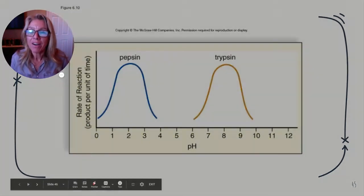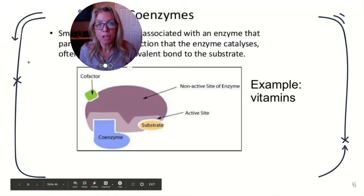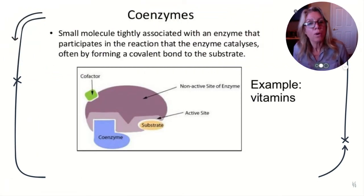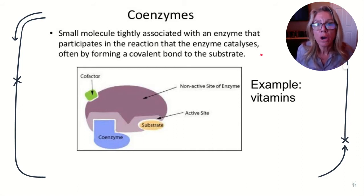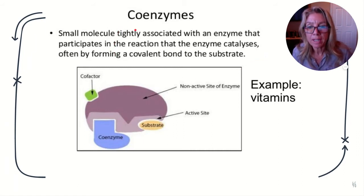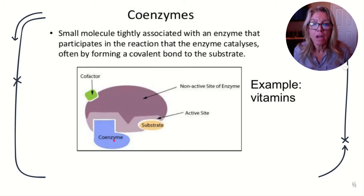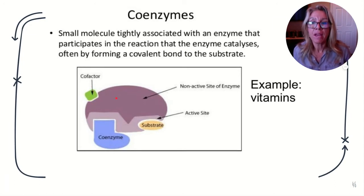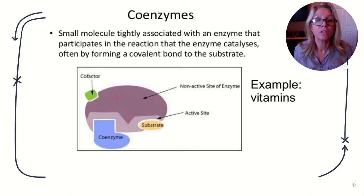Coenzymes work with the enzyme — it's not like a co-worker, it literally works with the enzyme. A coenzyme could be a vitamin or another molecule; if it's a cofactor, it might be a metal. They help the enzyme get into its appropriate shape to act as a catalyst.